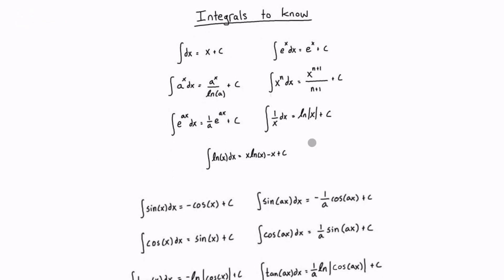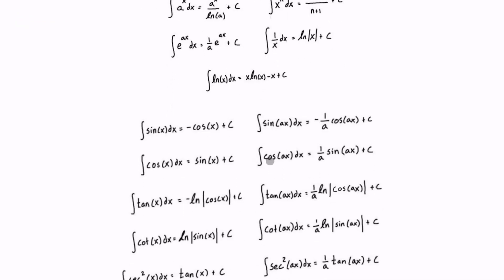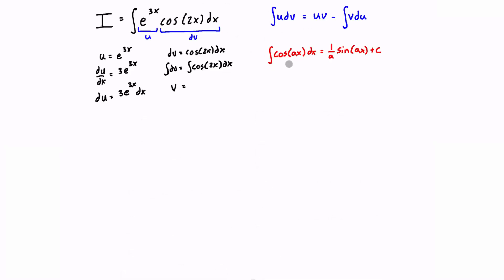We look for the form cos of something-x, and that gives us: the integral of cos(ax) dx equals 1 over a times sine of ax plus c. Substituting a = 2, we get v equals 1 over 2 sine of 2x. I'm writing this in red because I'm going to drop the +c for the next few steps to keep things clean. All those arbitrary constant terms will combine into a single +c at the end, so it doesn't affect the result.